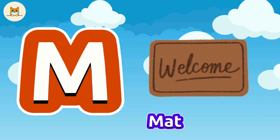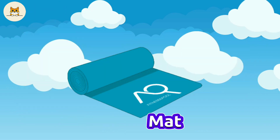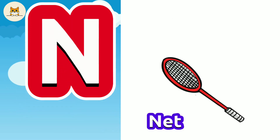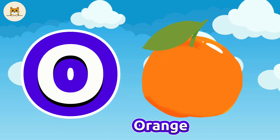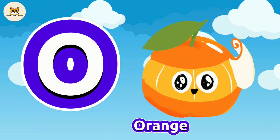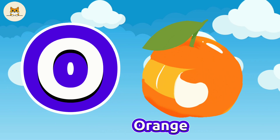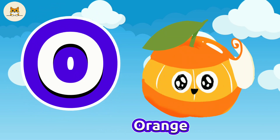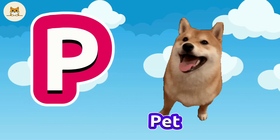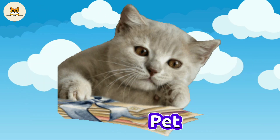M is for Mat. M, M. Mat. N is for Net. N, N. Net. O is for Orange. O, O. Orange. P is for Pet. P, P. Pet.